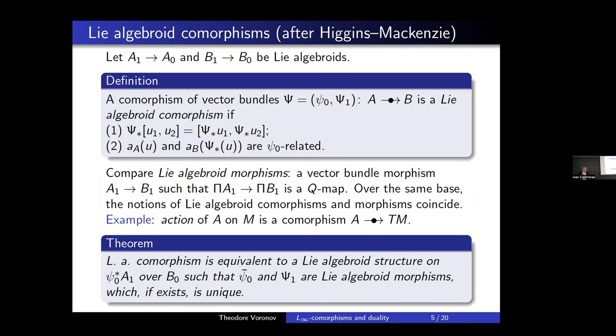This can be done for Lie algebroids, as established I think by Hübschmann. To compare with Lie algebroid morphisms, it is not so easy to do in terms of sections, but the easiest way is in terms of supergeometry: one considers the corresponding vector bundles with reversed parity, defined by homological vector fields. An algebroid morphism is then a Q-map. One can also explain the notion of comorphism in terms of homological vector fields, which will be done later in the more general L∞ context.